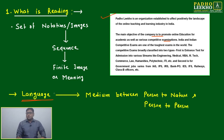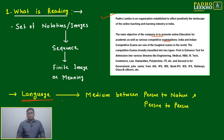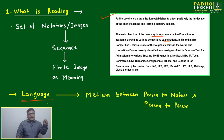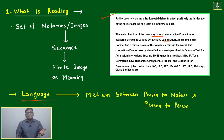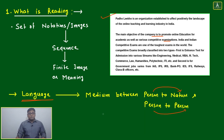Language has a very wide scope. For your CAT exam, the first thing is written language. In the second round of testing, your spoken language will also be checked, and the third type — body language and facial expression — will be assessed by interview panels. For example, a good painter expresses thoughts and feelings not through spoken or written language but through painting and pictography. Language is a medium between person and nature, and person to person — that is its basic purpose.